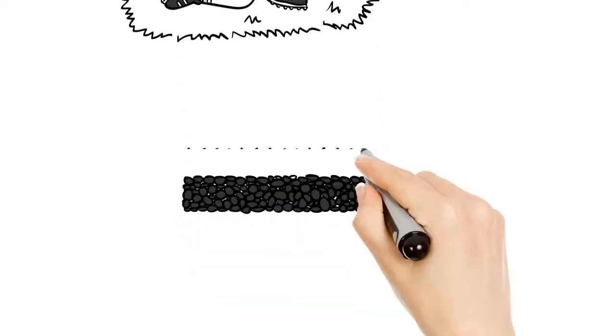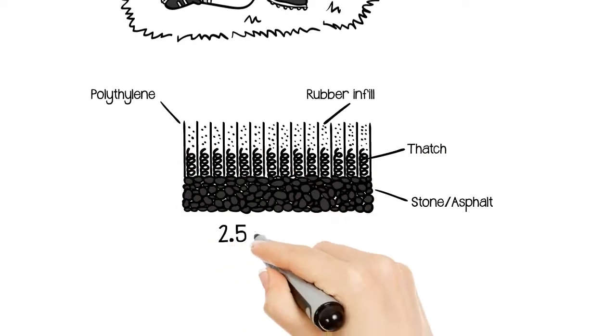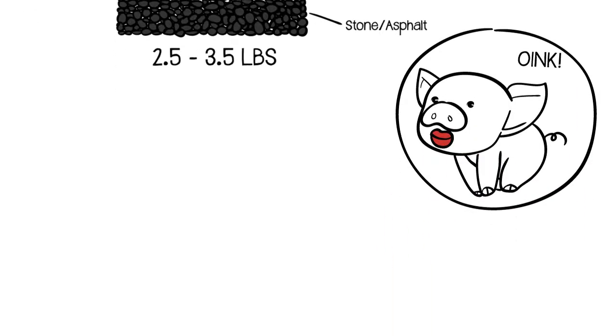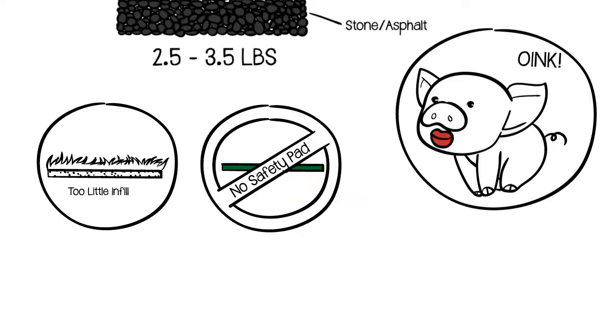Today, the leading thatch company has surrounded those nylon fibers with some polyethylene blades and a sprinkle of infill. Like putting lipstick on a pig. The problem? Too little infill, and they remove the safety pad.